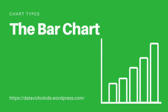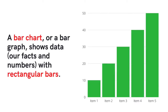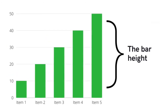Let's learn about bar charts. A bar chart or a bar graph shows data — facts and numbers — with rectangular bars. Bars' heights or lengths are equal to the facts and numbers that they show.